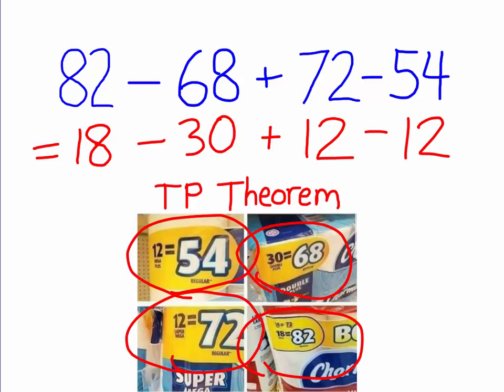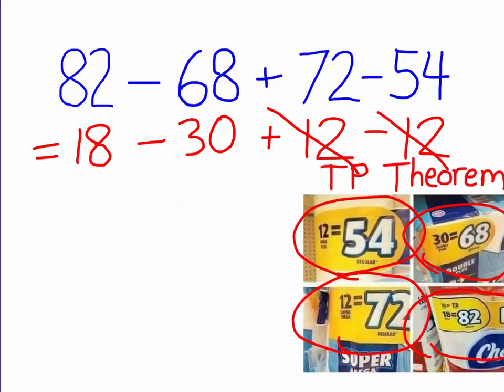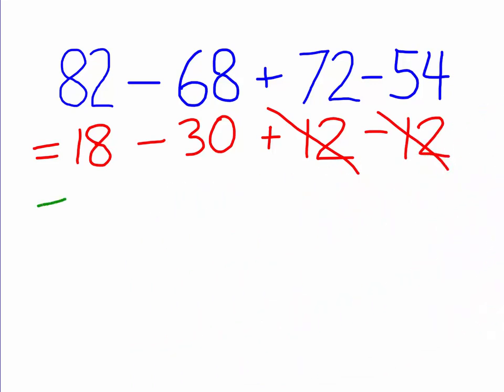So, we see that the 12s subtract each other out, or cancel each other out, as the young people like to say. Okay, and we're left with 18 minus 30. But 18 minus 30, that doesn't make any sense.